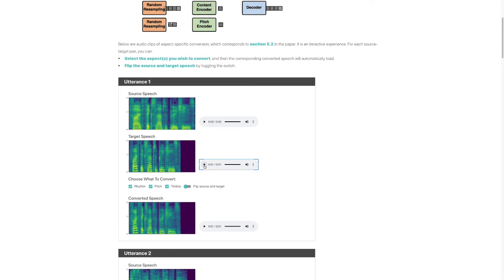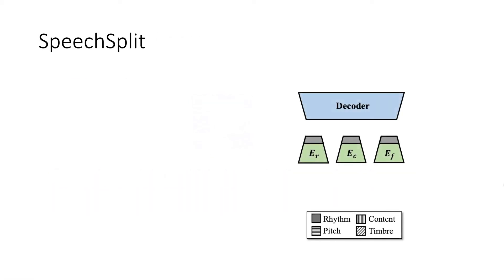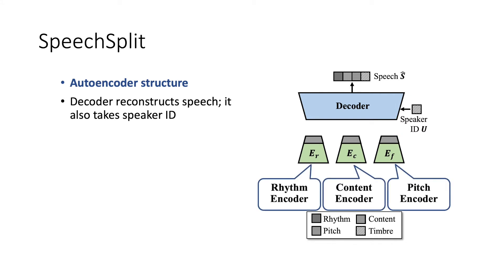Note that this is done without relying on any text transcription labels. Here is a more detailed introduction of the SpeechSplit algorithm. SpeechSplit consists of three encoders and one decoder. The goal of the decoder is to reconstruct speech based on the outputs of the encoders as well as the speaker identity label. We assume that the speaker ID contains equivalent information to timbre, because different people have different characteristic voices. The three encoders are called the rhythm encoder, the content encoder, and the pitch encoder.